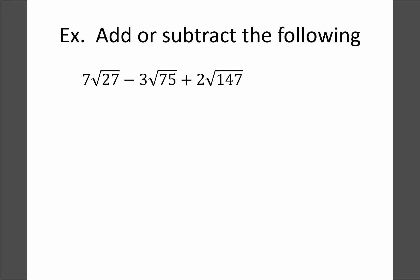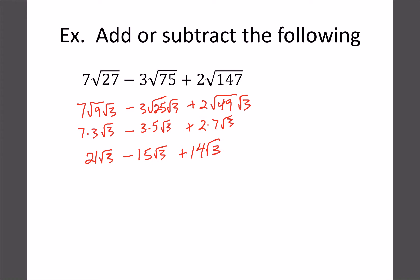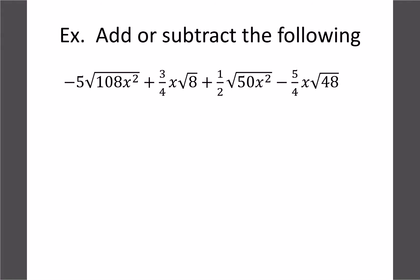For an example with outside coefficients, think of it as 7 times root 27. Break root 27 into 9 and 3 to get 7 times 3 root 3, which is 21 root 3. Root 75 breaks into 25 and 3, giving 3 times 5 root 3 = 15 root 3. Root 49 times 3 gives 2 times 7 root 3 = 14 root 3. Then 21 plus 15 minus 14 equals 20 root 3. You can work row by row or one term at a time — either approach works.